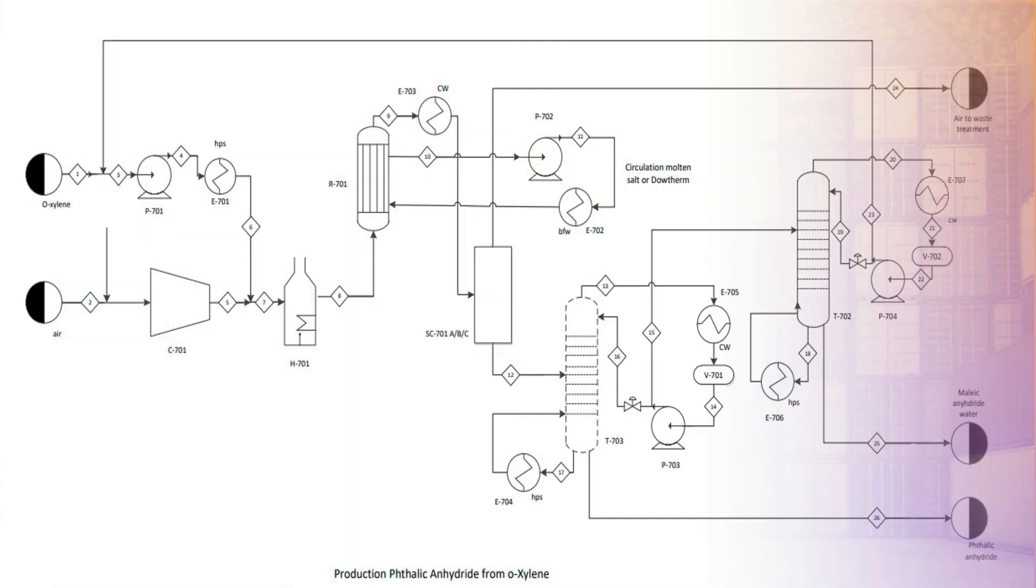Process flow diagram. This is the process flow diagram for production of phthalic anhydride using o-xylene.